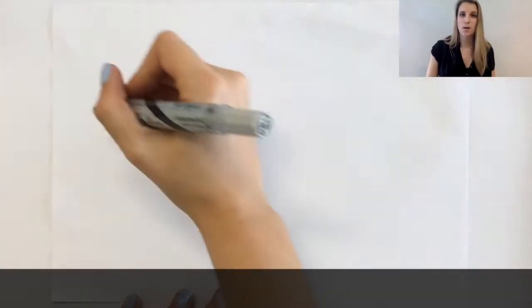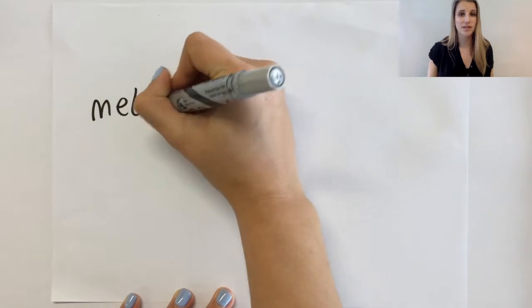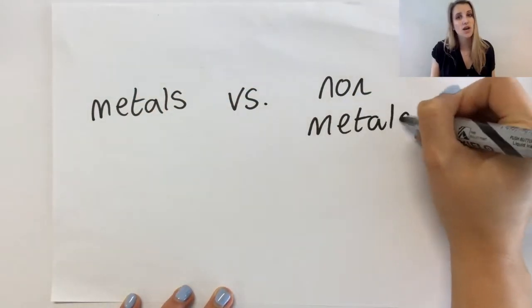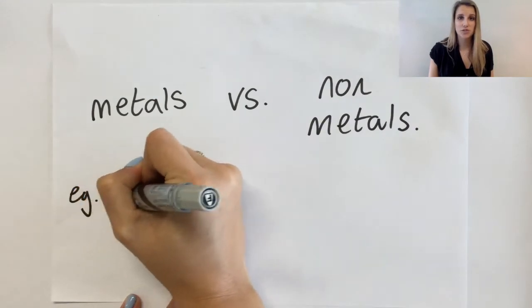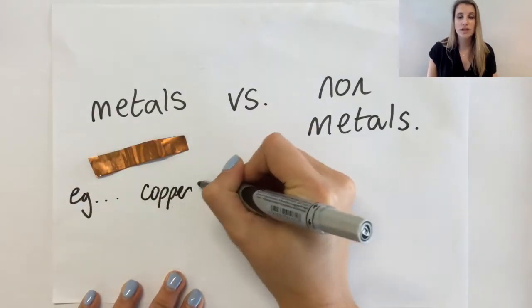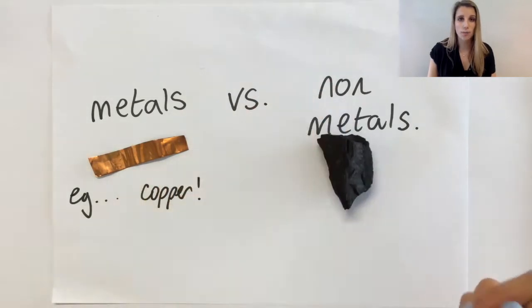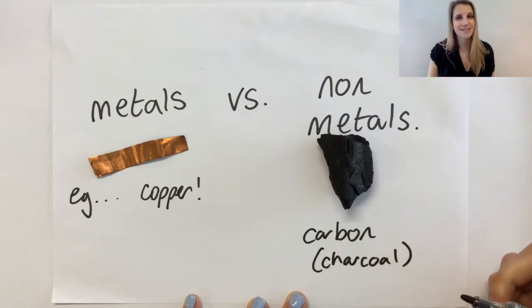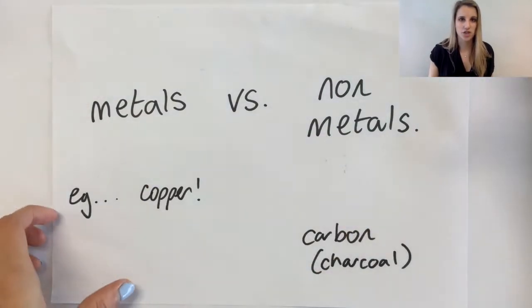The first thing to think about whenever you get asked a question on metals and non-metals is make sure that you've got an example in your mind. For metals we're going to use copper, and for non-metals we're going to look at carbon or charcoal, the stuff you put on a barbecue. I want you to keep those two in your mind today as examples of each.